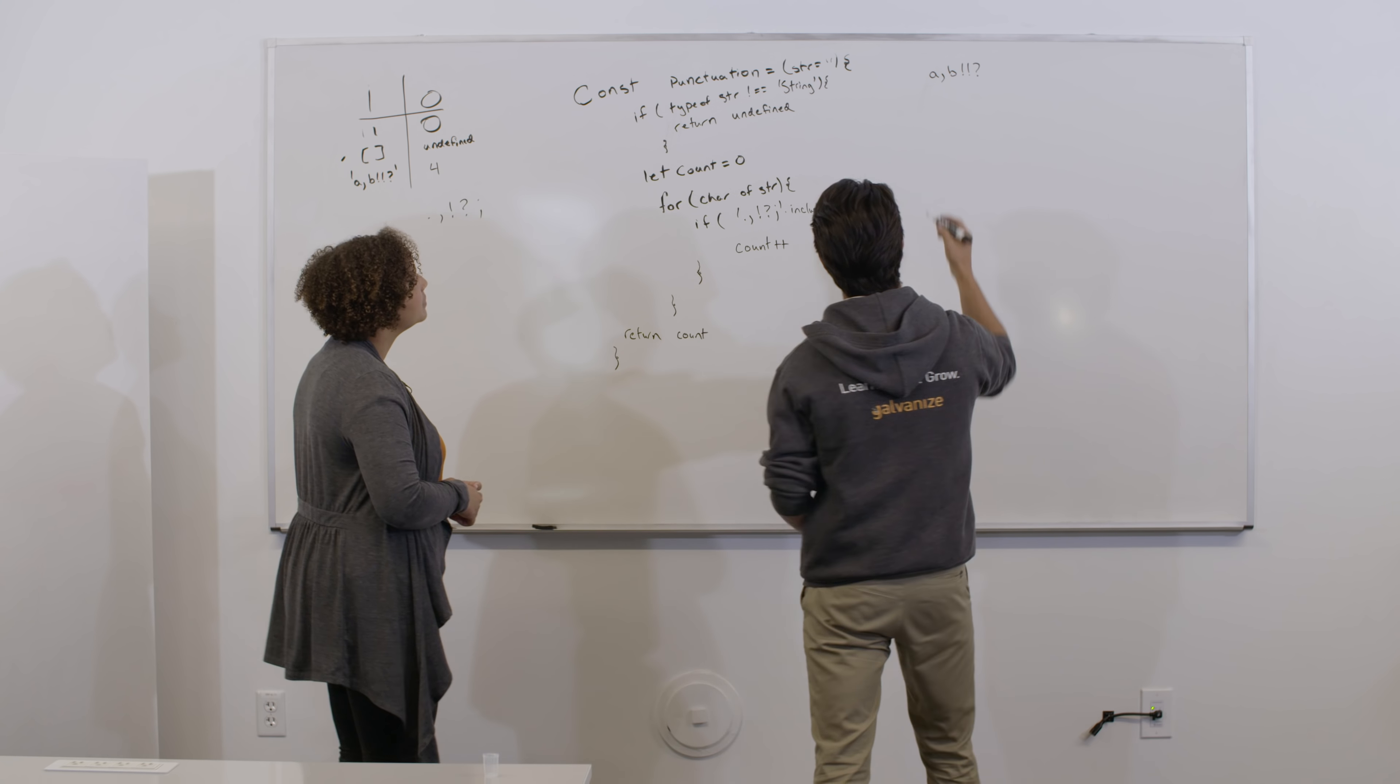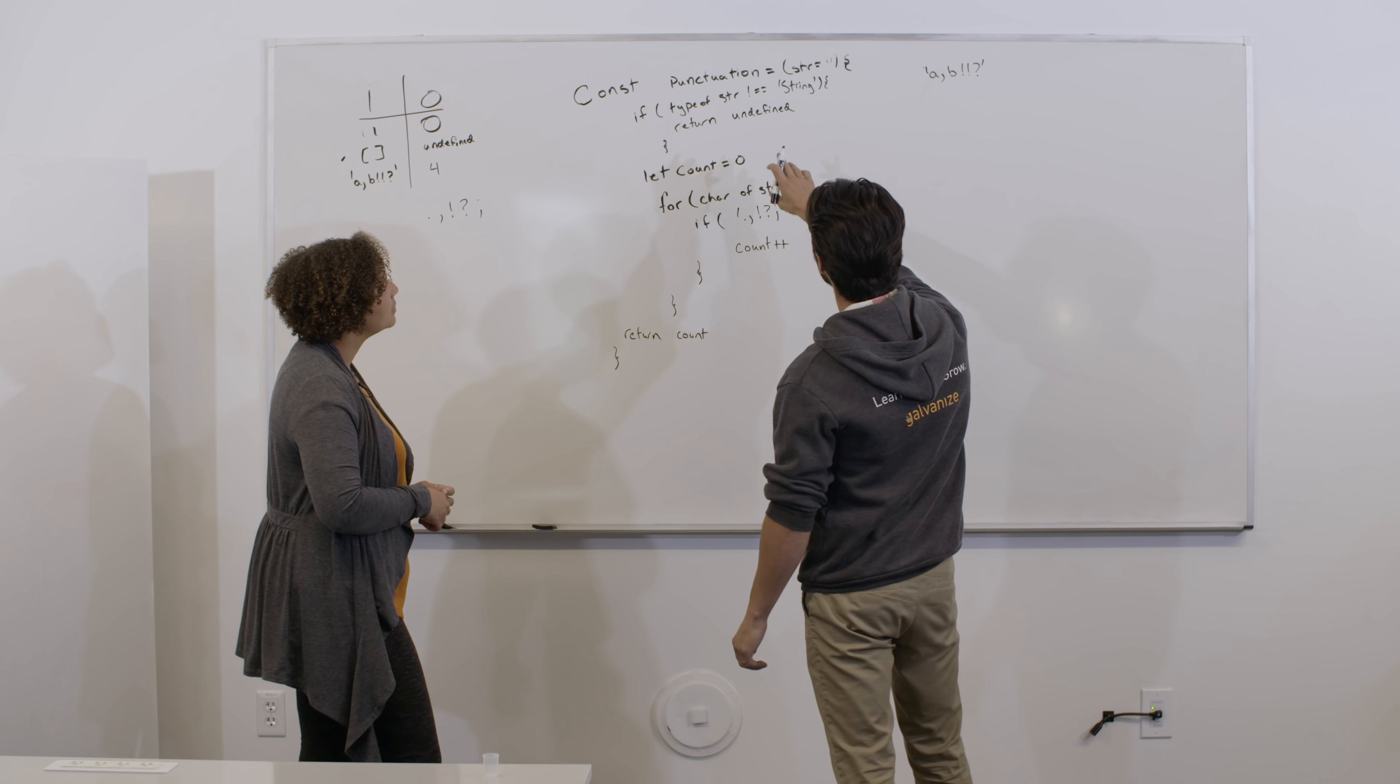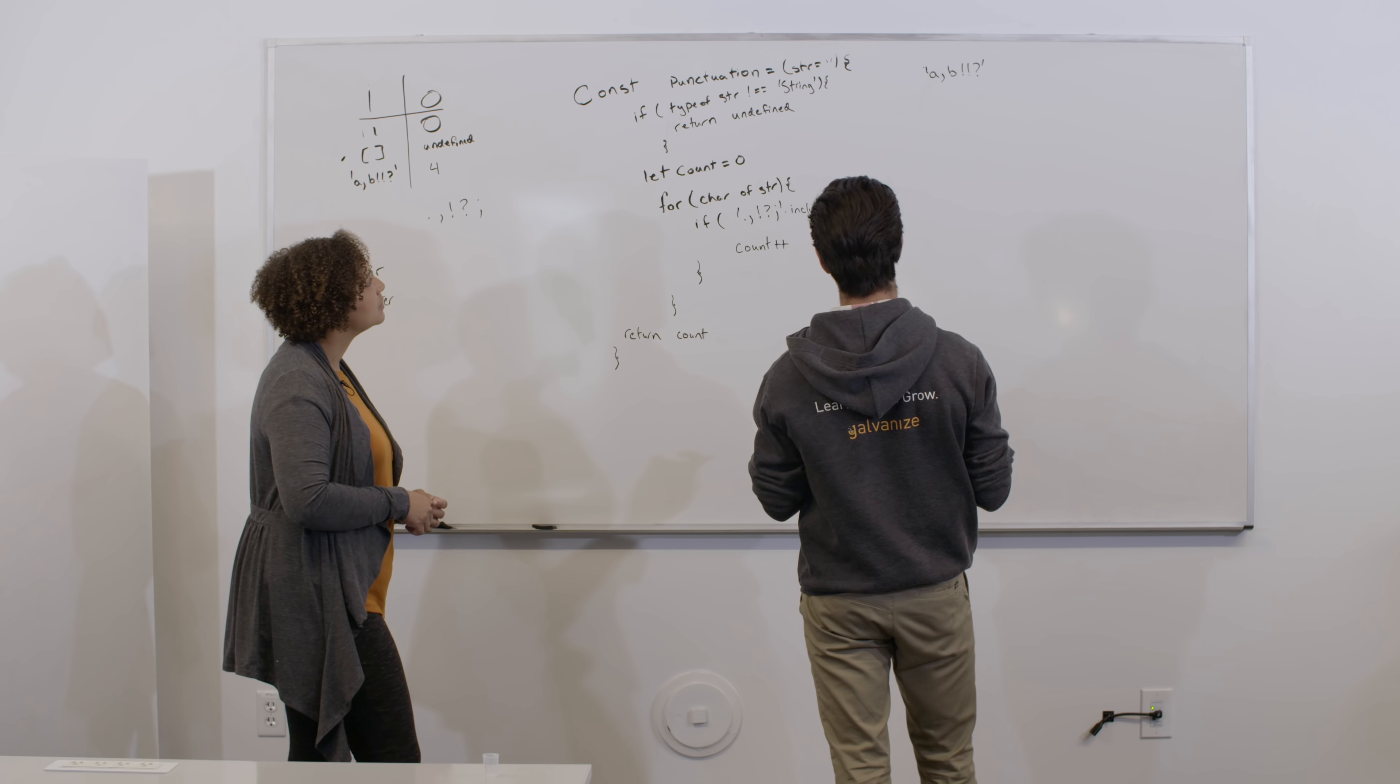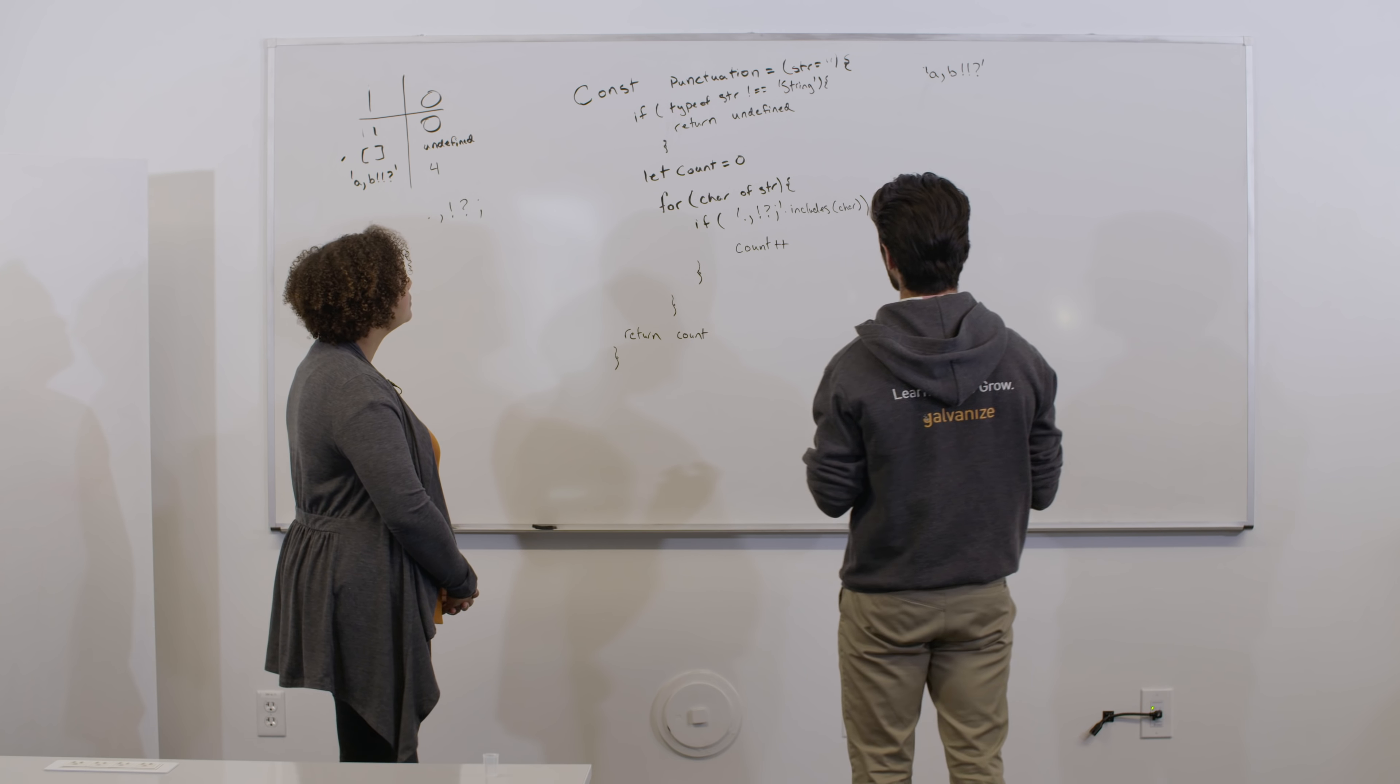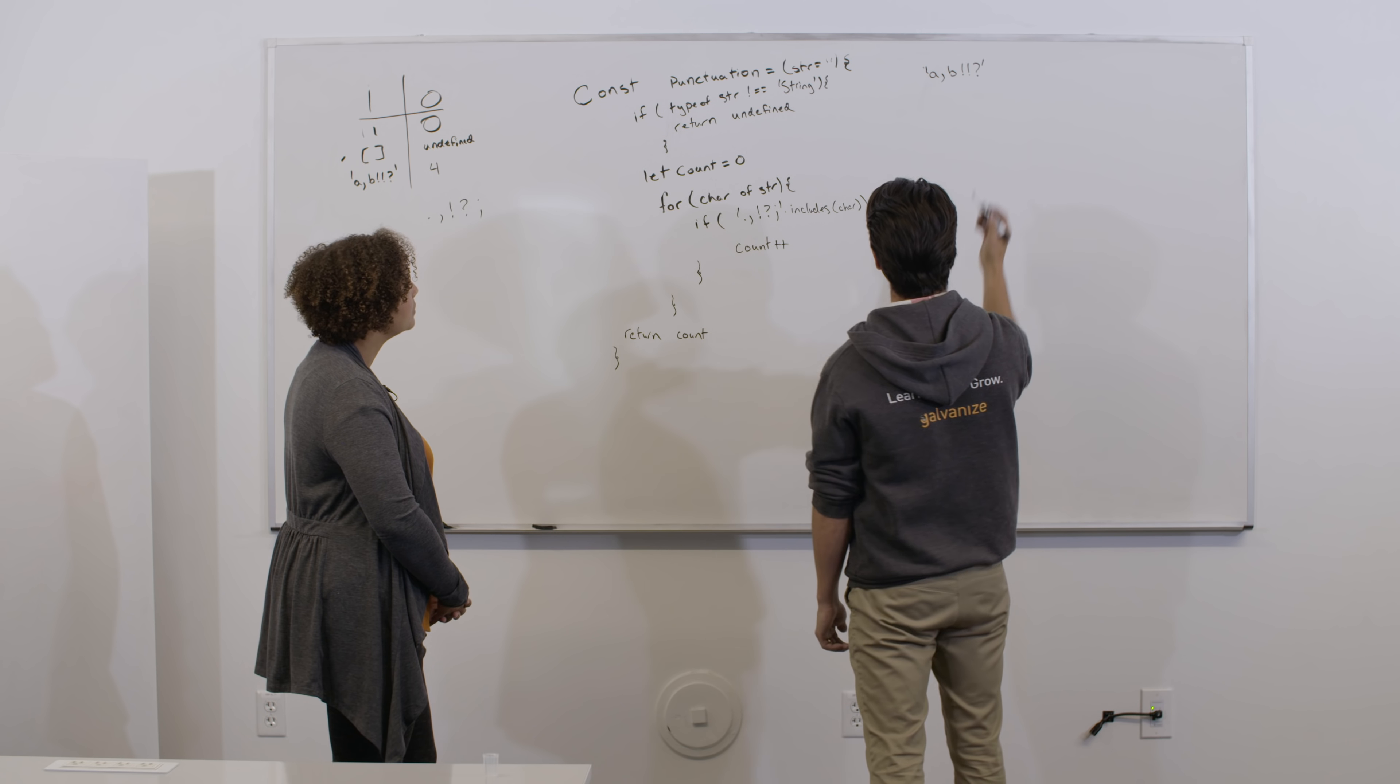So when that's passed into this function, it's going to go in, it's going to say, is the type of this a string? I'll just make it a string for it to be clear. And so it is, it'll go on, it's going to say that the count is zero. And it's going to say, for character of string, and it's going to go through each of these.